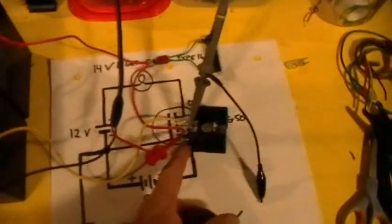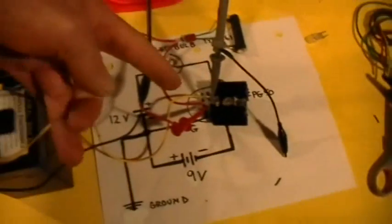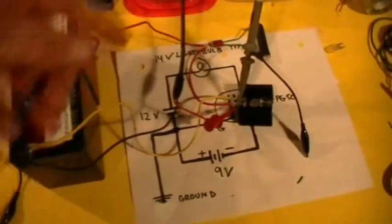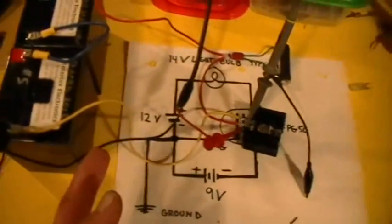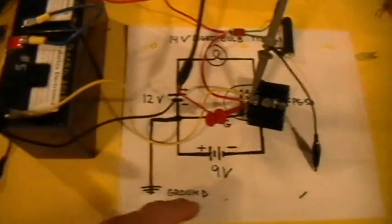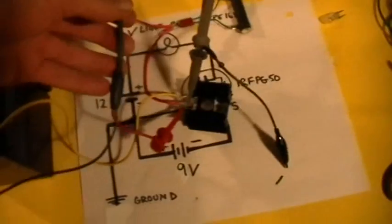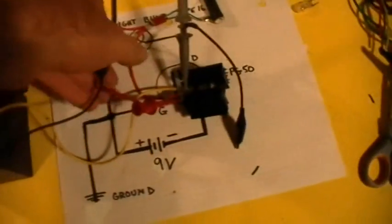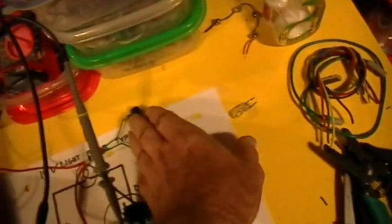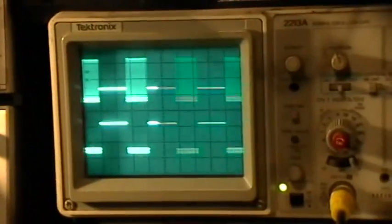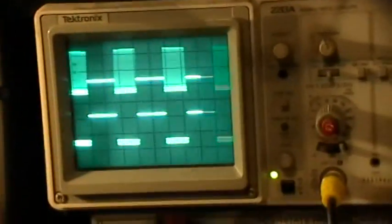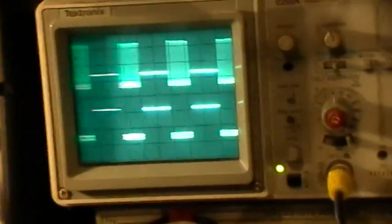Alright, so what say you now? The function generator is where the 9-volt battery was before, only flipped. We have the red lead to the source and the black lead to the common ground, just like the Ainsley diagram. Is the load heating up? No, because there's no Q1 to put real current through that load. There's just a Q2, and it's oscillating just fine.